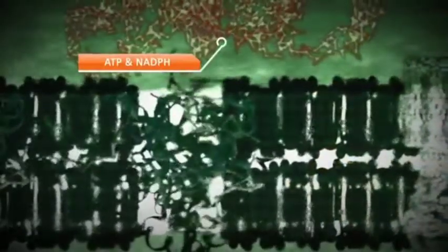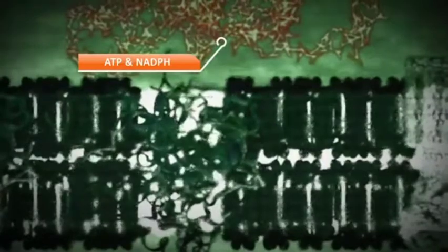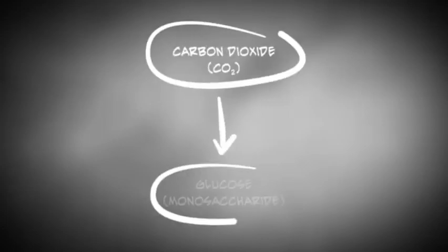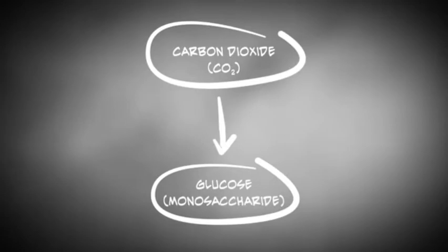ATP and NADPH, which are products of this process, can then be found in the stroma, where a process known as the Calvin cycle takes place. No light is necessary for the Calvin cycle. During the Calvin cycle, carbon dioxide is reduced to form carbohydrate in a series of reactions. Here, NADPH is the reducing power source whereas ATP is the energy source.